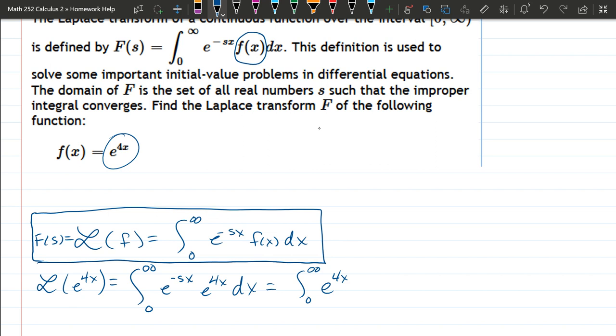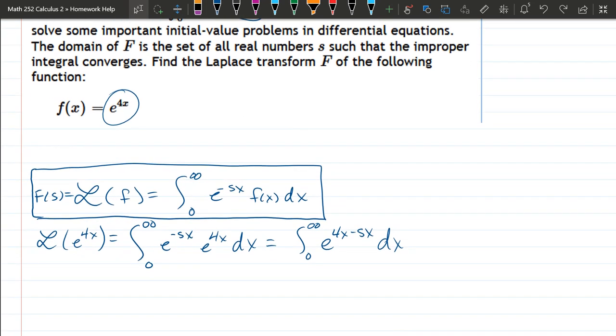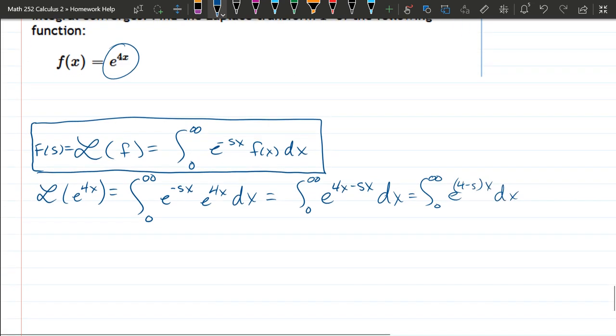And I'm going to write this as e to the 4x minus sx. Now my s's look like fives, just be careful. If I write a five I try to make it a little more boxy up in this part. So just make sure you know this is an s. All right, so how do we find this antiderivative? Oh, there's one more thing we can do. We can factor out e to the (4 minus s)x dx.